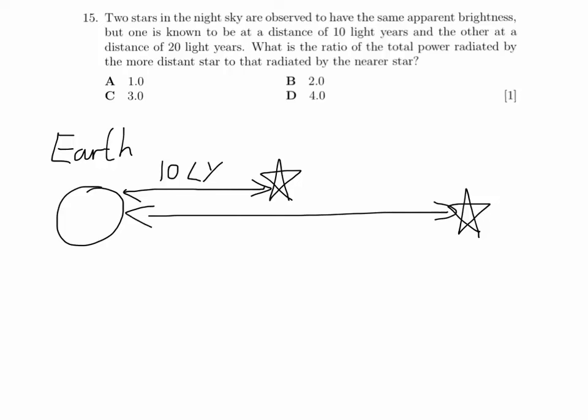this question, and that is 20 light years away. The thing that we need to know about the brightness and distance is that there is an inverse square law. So we're going to use B to represent the brightness, and B is proportional to one over the distance squared.